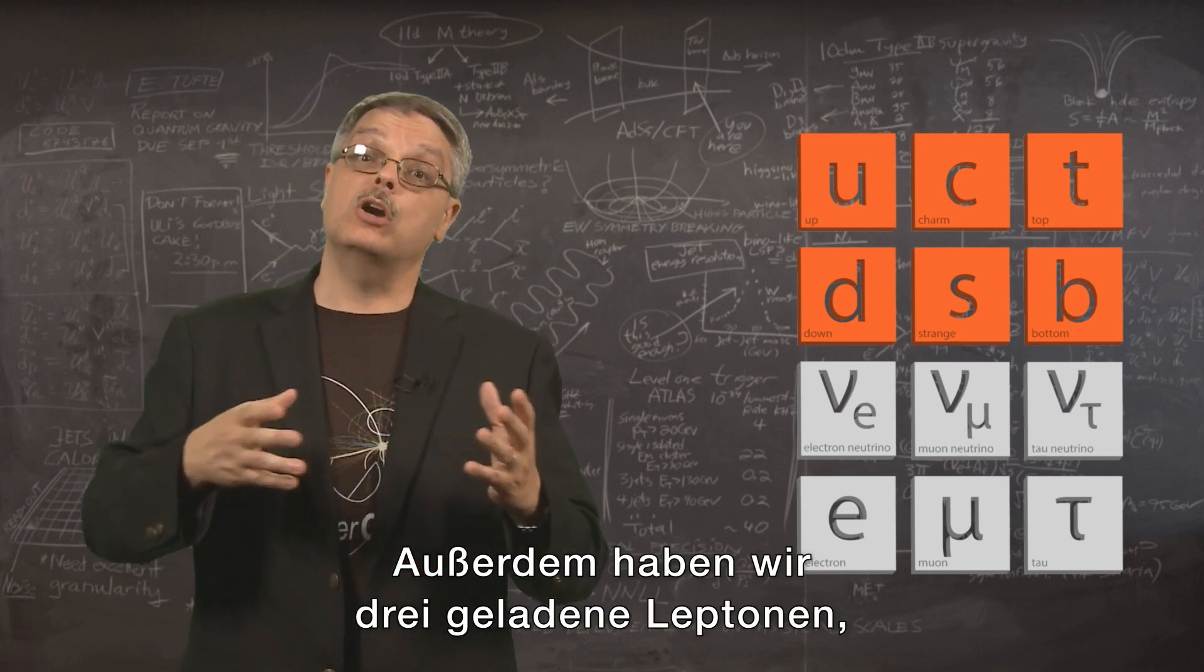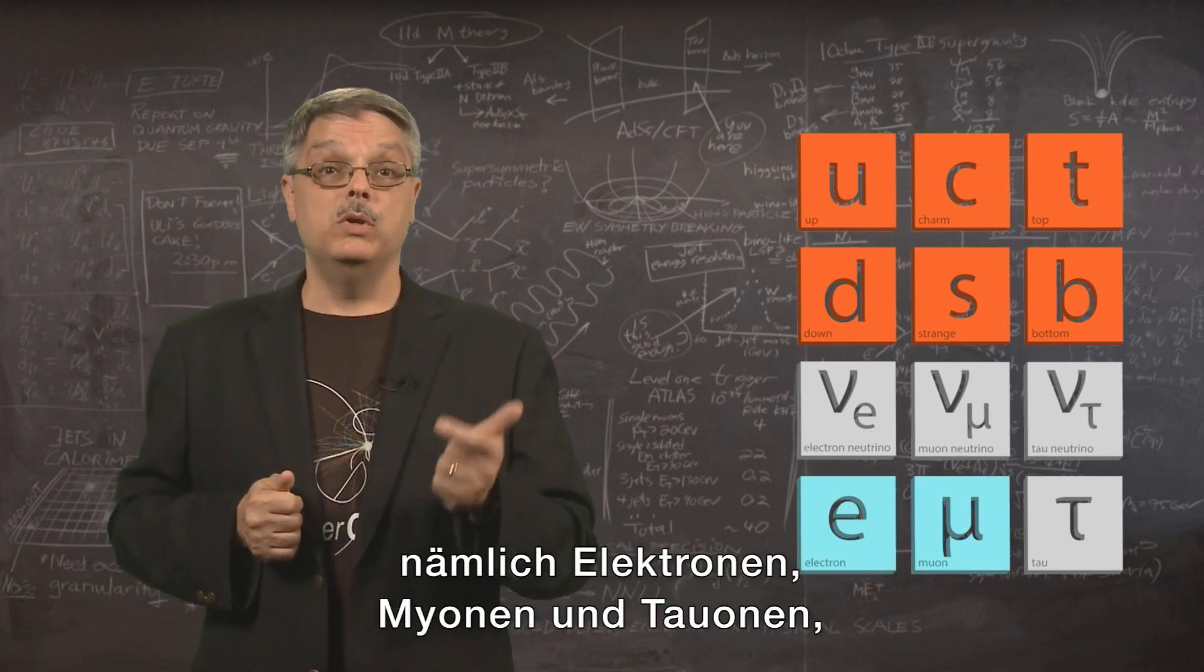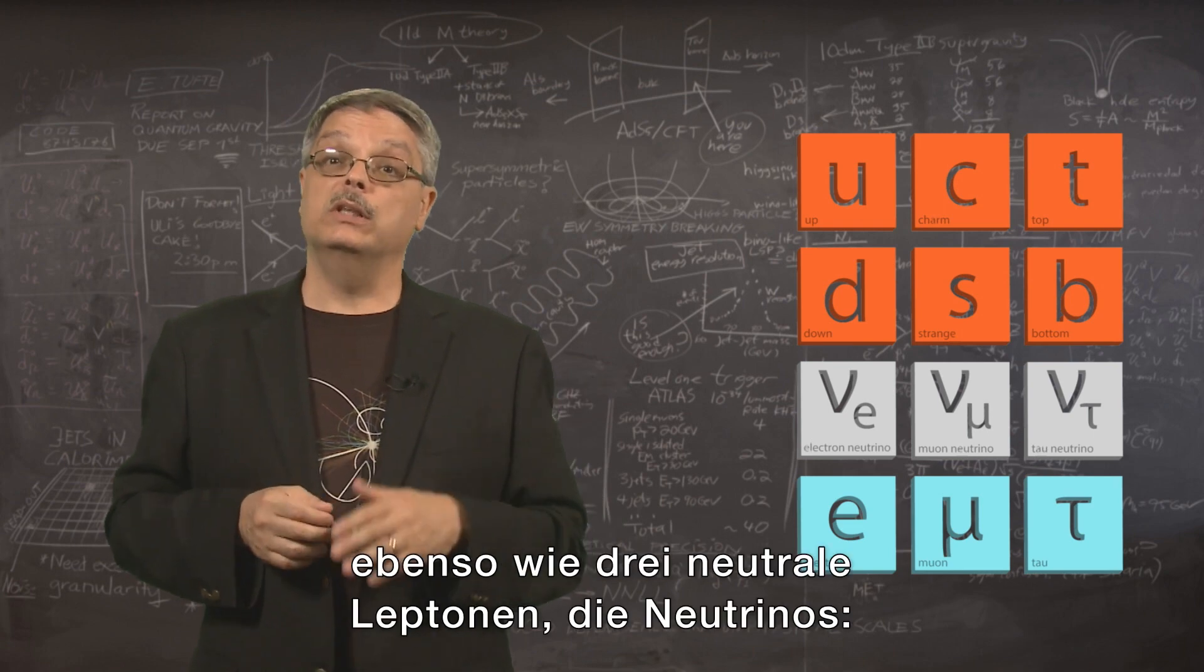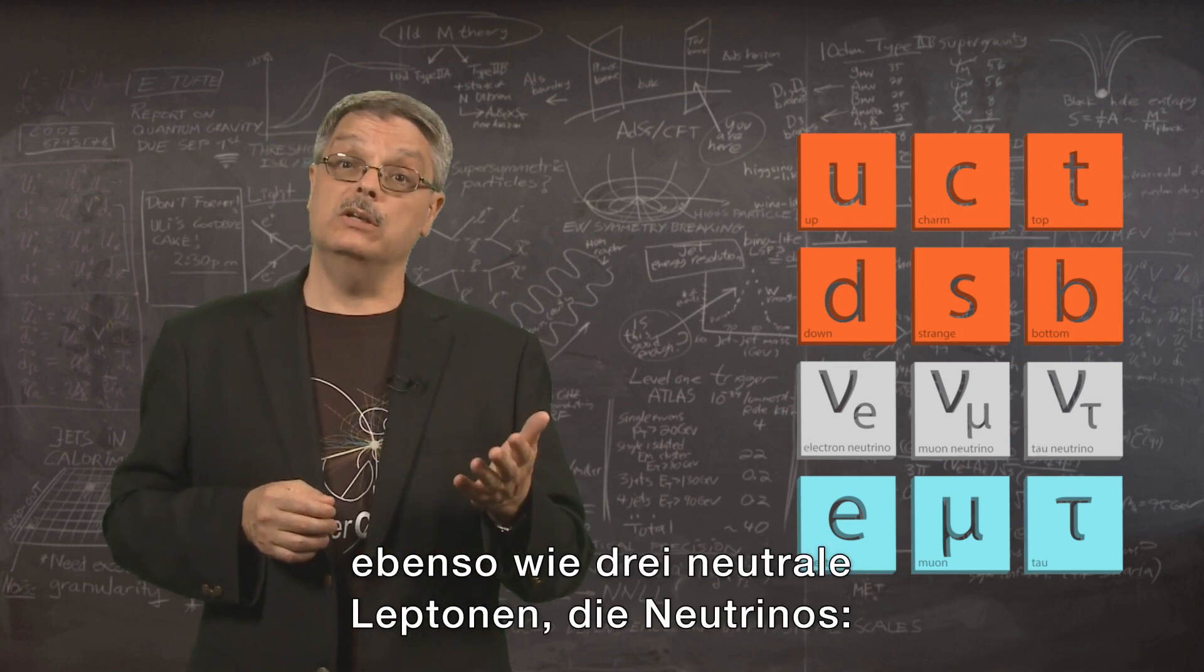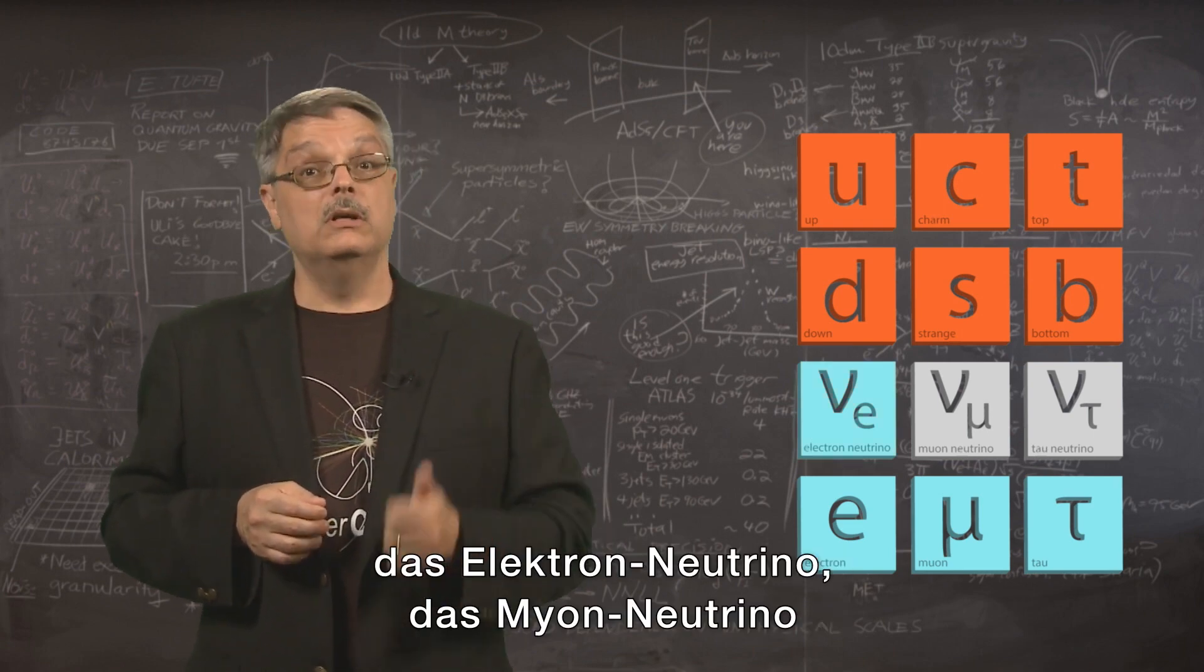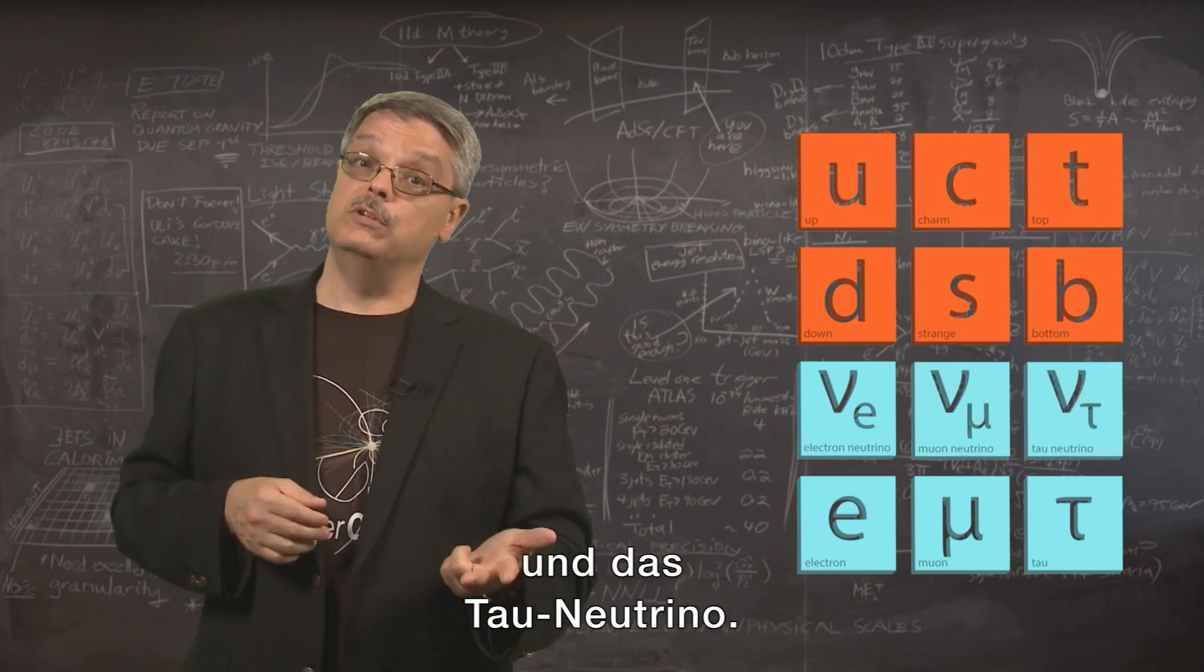In addition, we have three charged leptons called electrons, muons, and taus, as well as three neutral leptons called neutrinos: the electron neutrino, muon neutrino, and tau neutrino.